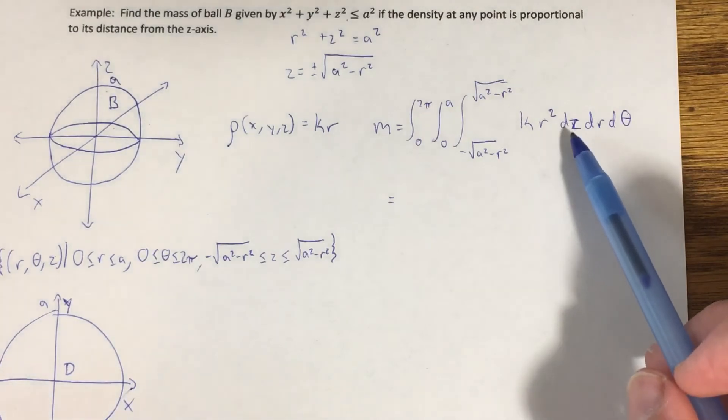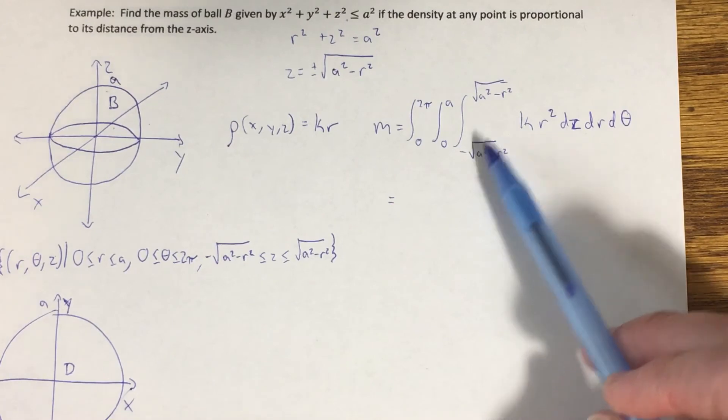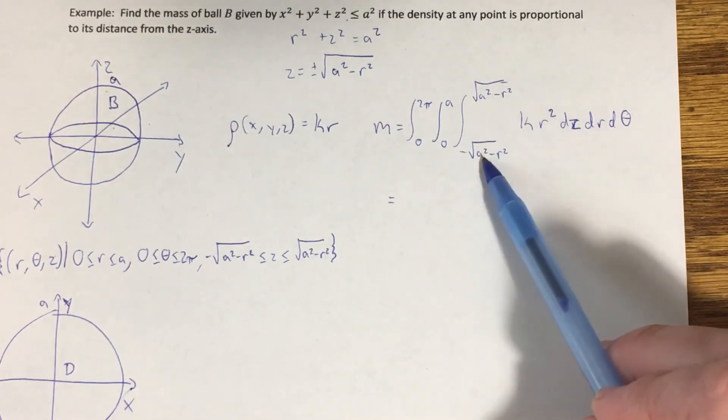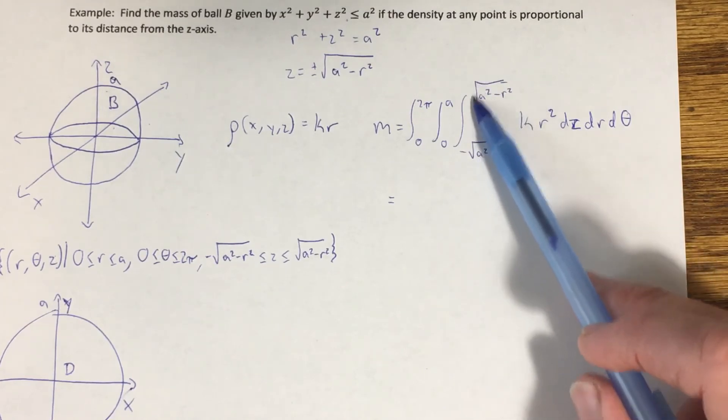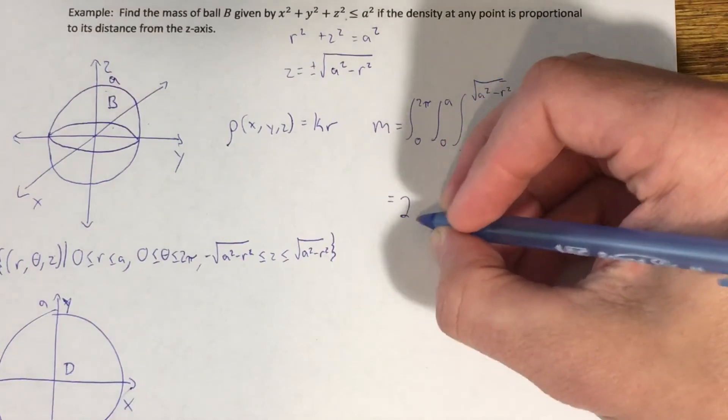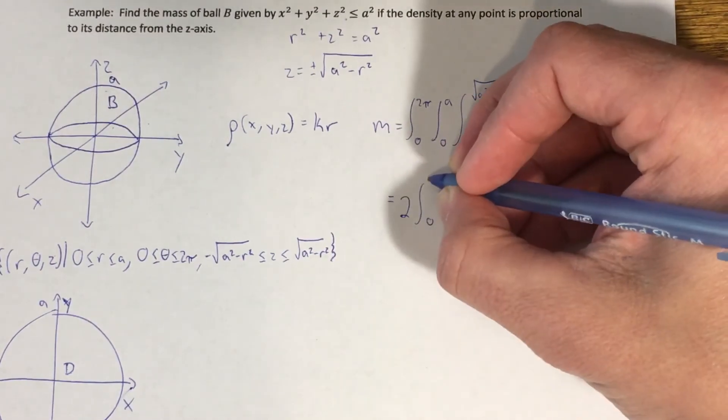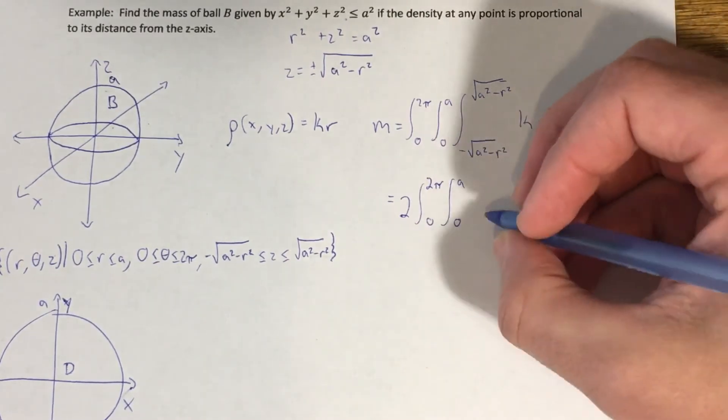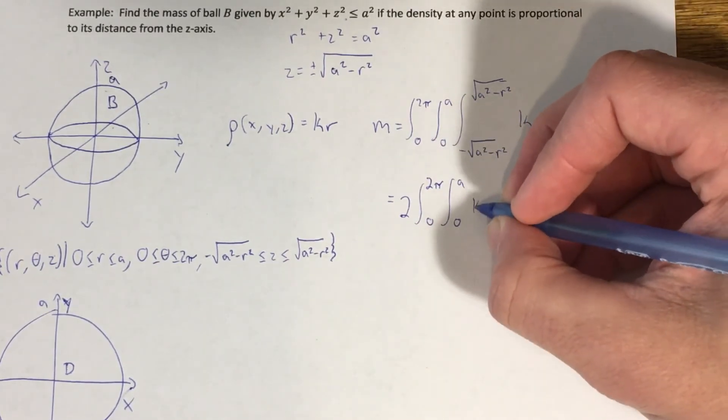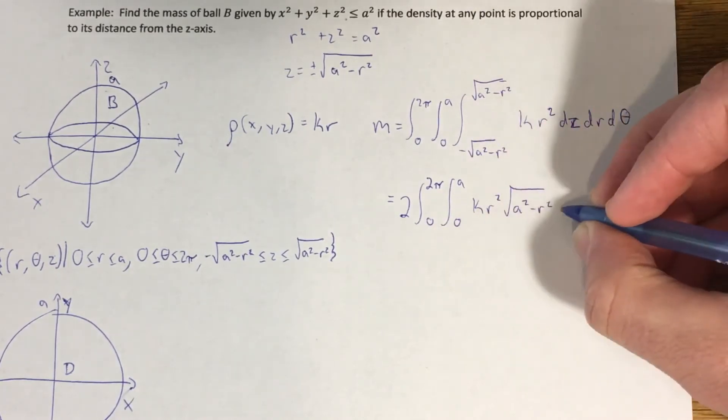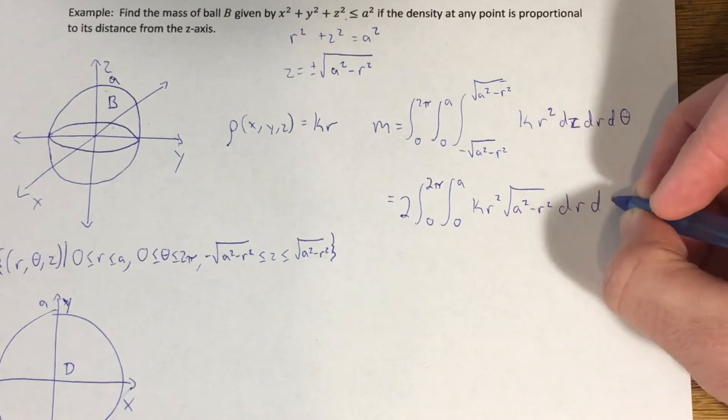Integrating this, notice all I'm going to end up with is a z. And then when I put in my limits of integration, I'm really just going to see, aside from the kr squared, I'm going to see this radical minus this one, which is the same thing as 2 square root of a squared minus r squared. I'm going to pull the 2 out this way. 2π integral from 0 to a. Now we have kr squared square root of a squared minus r squared dr dθ.